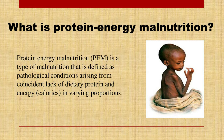Protein energy malnutrition is generally associated with children. PEM touches many adult lives but most strikes early in childhood. It is one of the most prevalent and devastating forms of malnutrition in the world, affecting over 500 million children. Most of the 33,000 children who die each day are malnourished. Inadequate food intake leads to poor growth in children and to weight loss and wasting in adults.